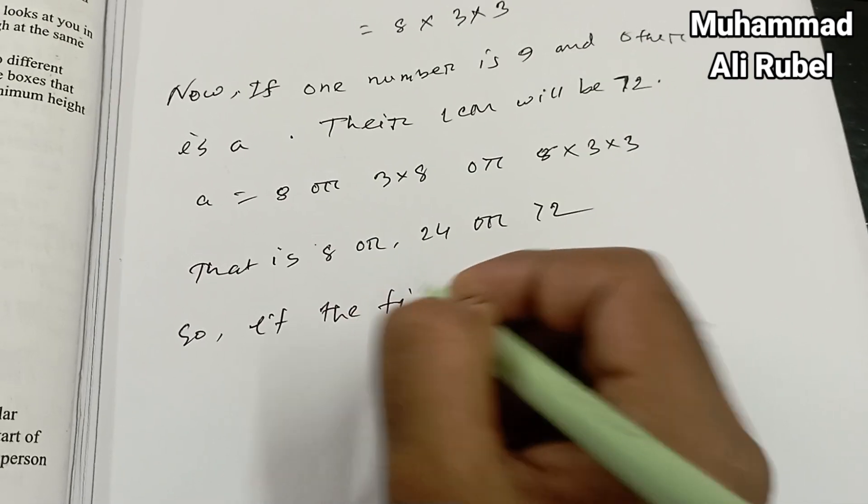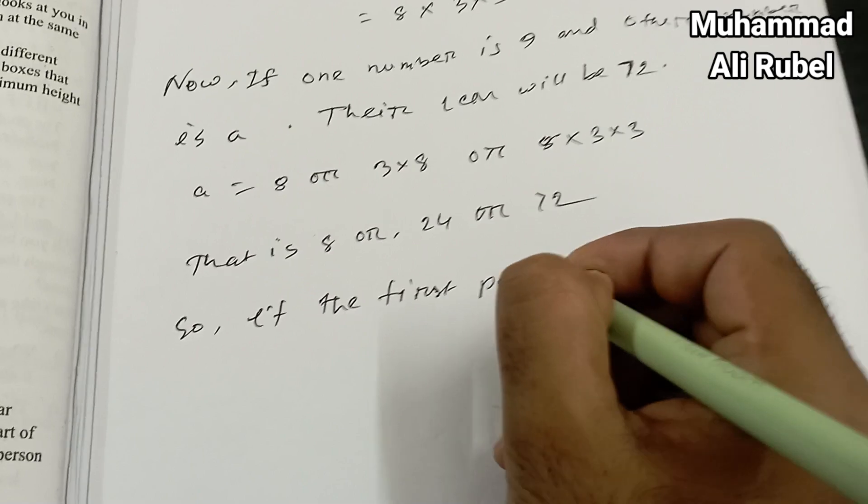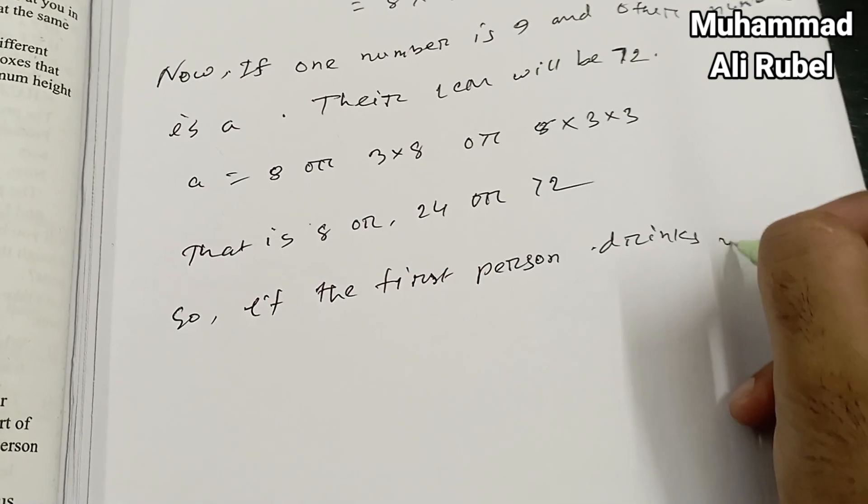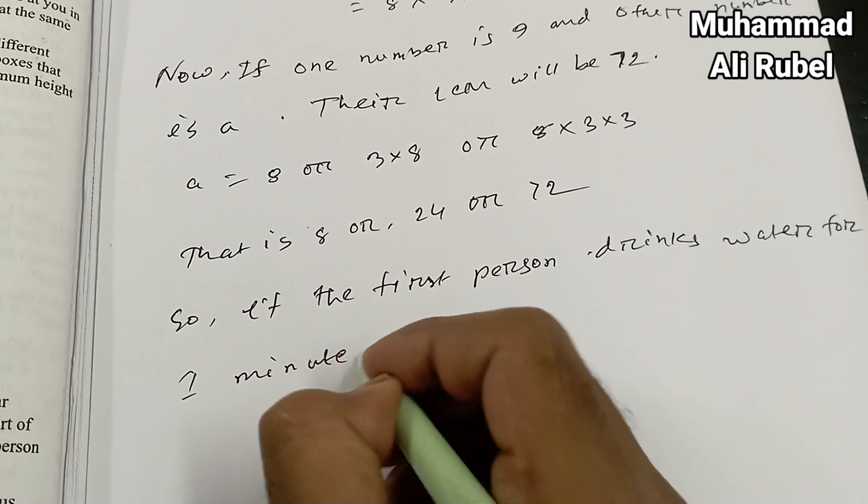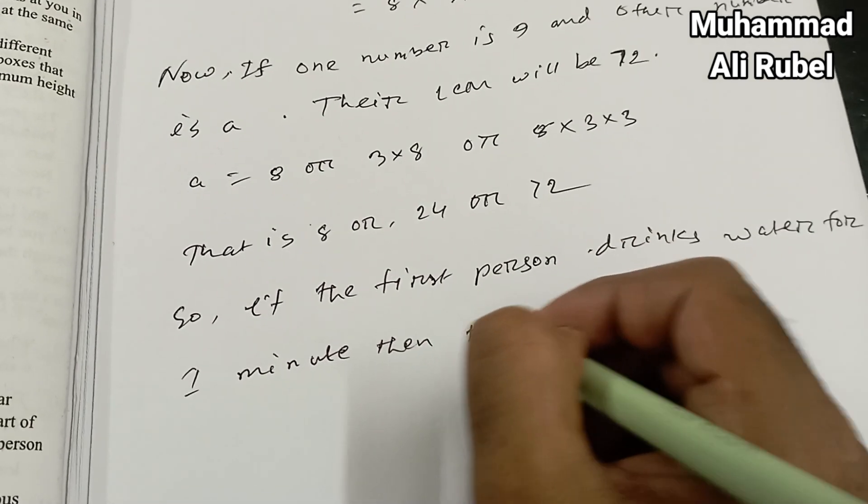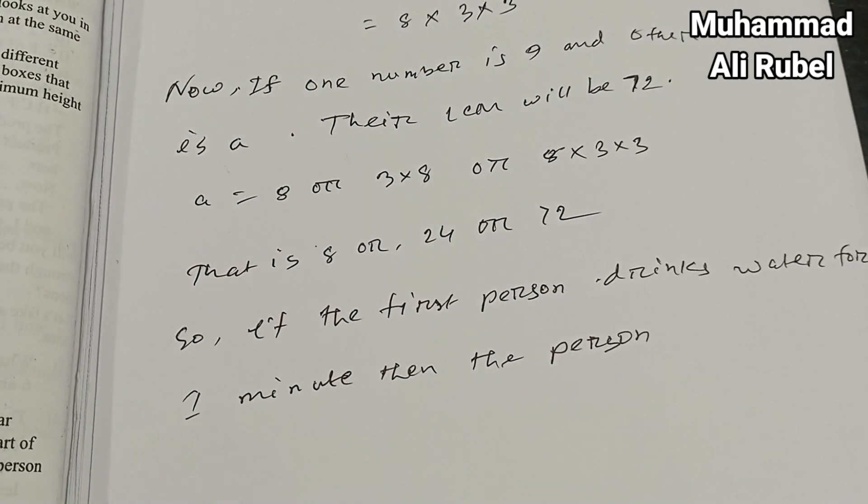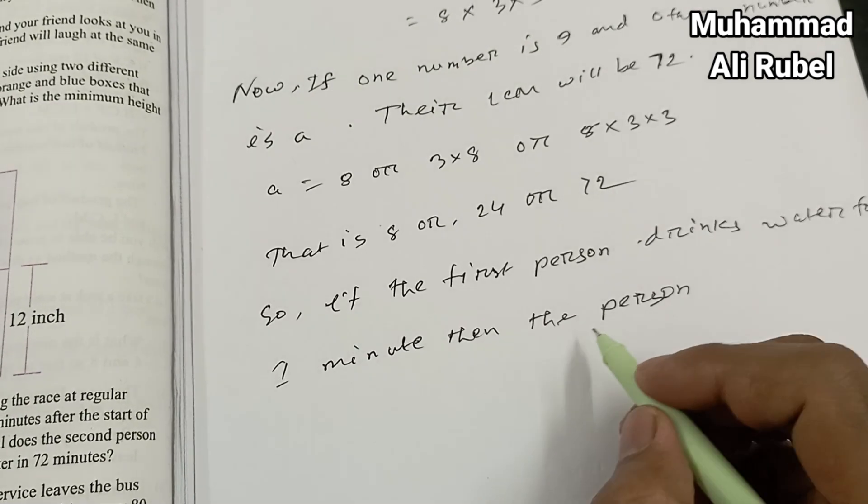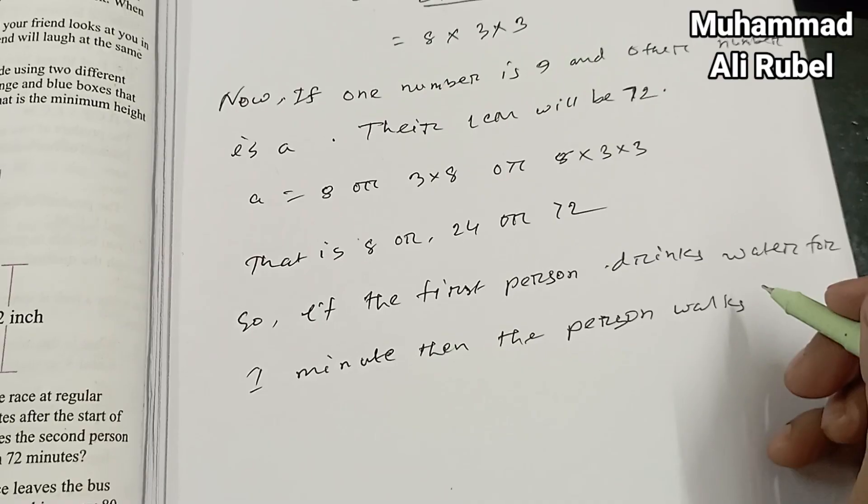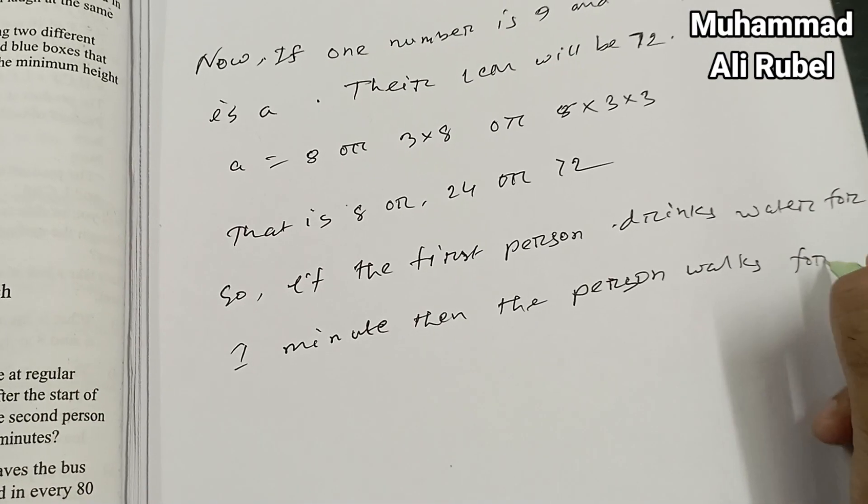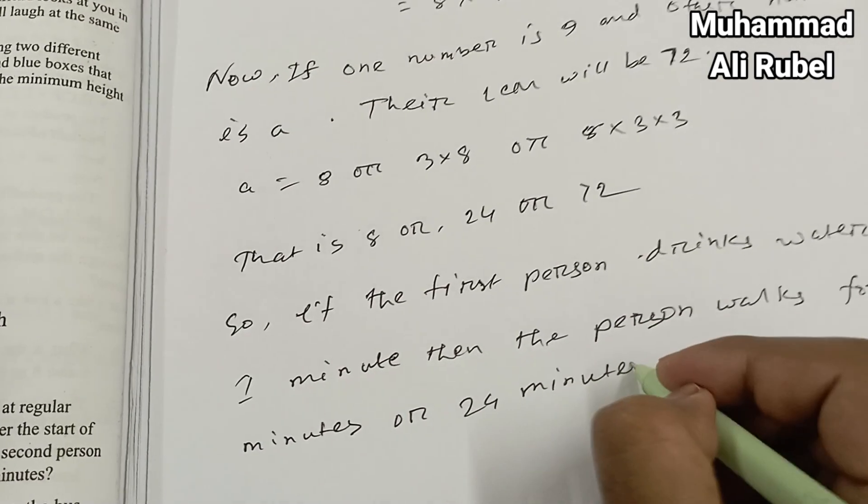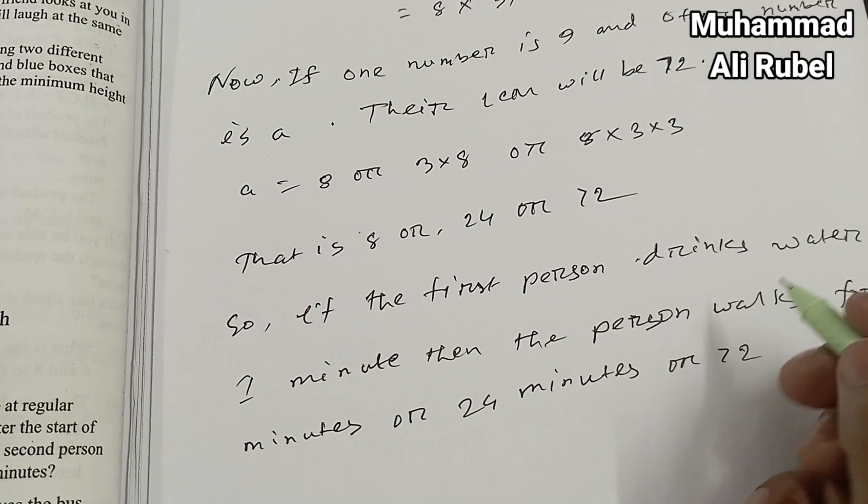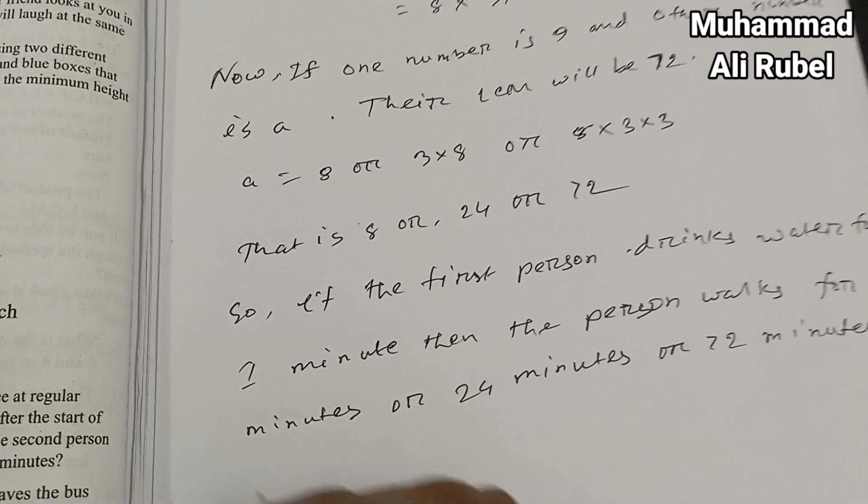If the first person drinks water for one minute, then the person works for 8 minutes or 25 minutes or 72 minutes.